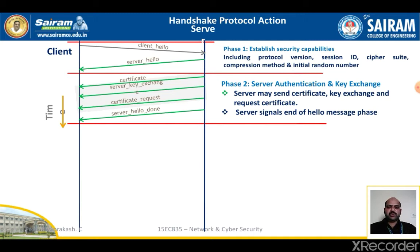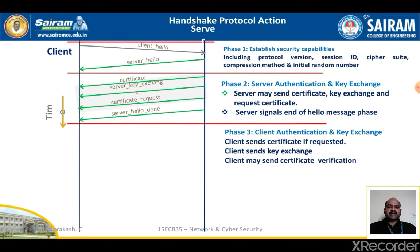After the server hello done, phase two ends and phase three begins — client authentication and key exchange. Upon receipt of the server done message, the client should verify that the server provides a valid certificate and check that the server hello parameters are acceptable. If all is satisfactory, the client sends one or more messages back to the server. If the server has requested a certificate, the client begins this phase by sending a certificate message.